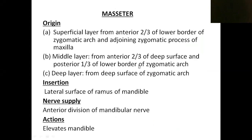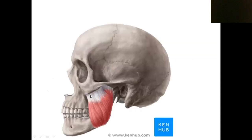The first one is the masseter muscle. To explain a muscle, you should have headings: origin, insertion, nerve supply, and action. The origin of the masseter muscle — it is a superficial type. There is one anterior two-thirds of the lower border of the zygomatic arch. This is our zygomatic arch — it has an upper border and a lower border.